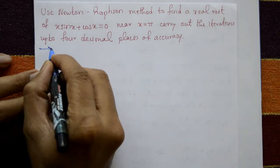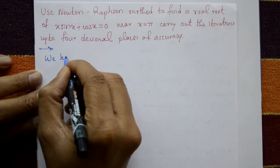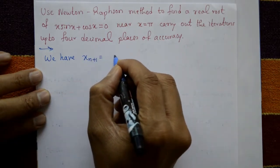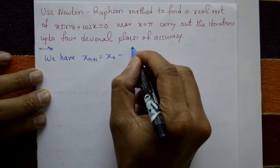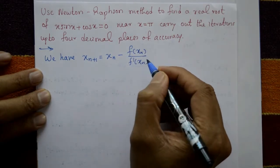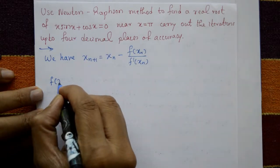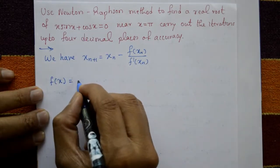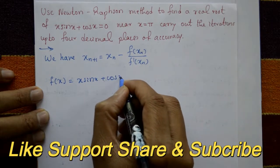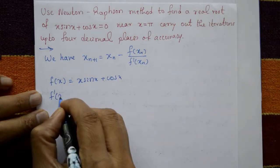Solution: The Newton-Raphson formula is x_(n+1) = x_n − f(x_n) / f'(x_n). The given function is f(x) = x·sin(x) + cos(x), and we need to find f'(x) by differentiating.